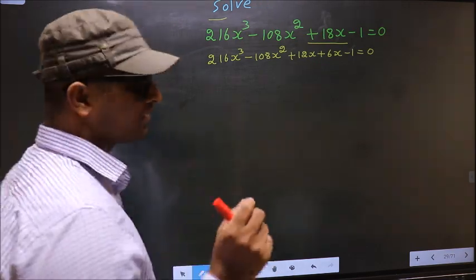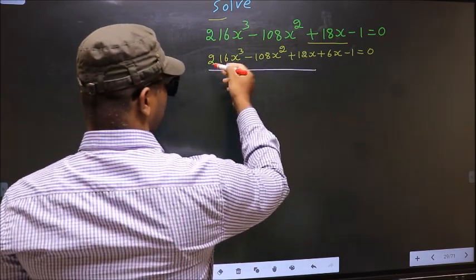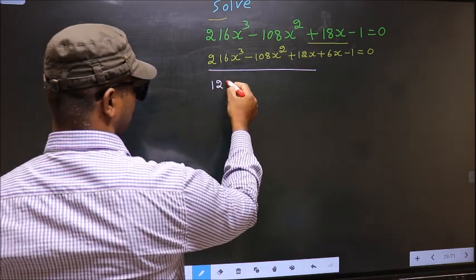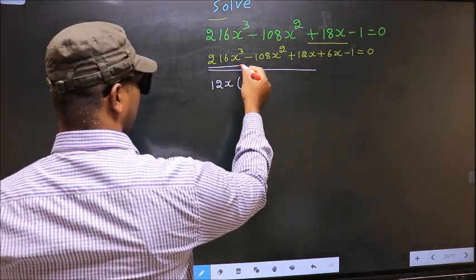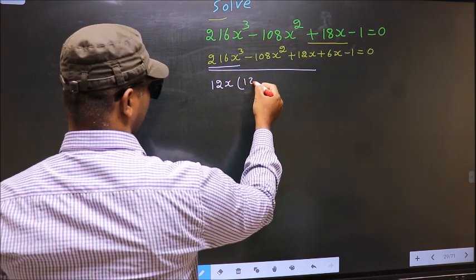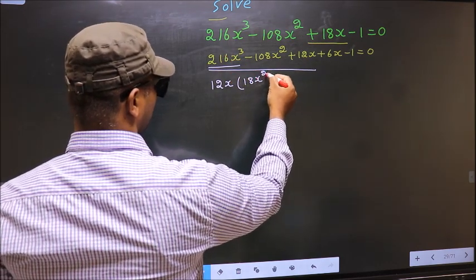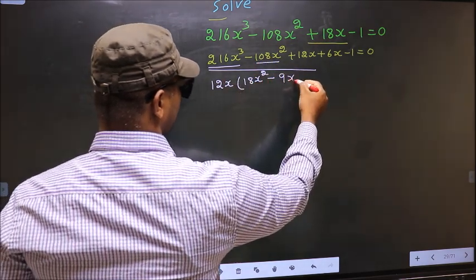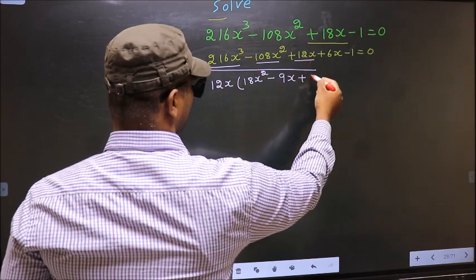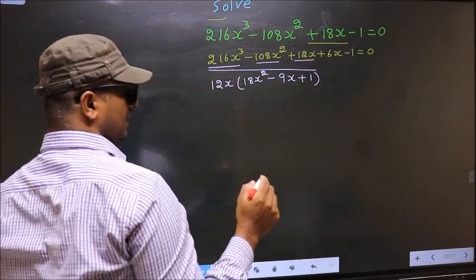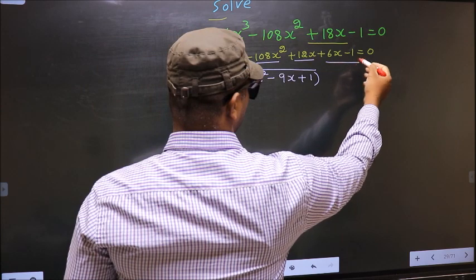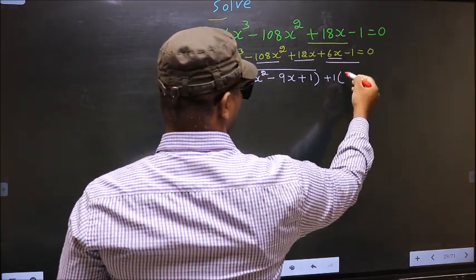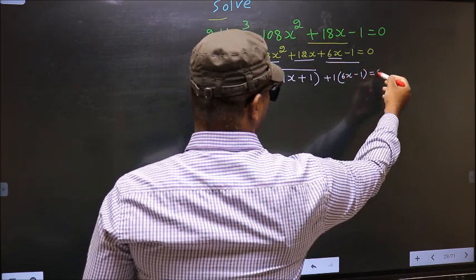Now from the first 3 terms, what can be taken out common is 12x. So taking 12x out you get 18x² minus 9x plus 12x out gives 1. From the last 2 terms what can be taken out common is plus 1, and you get the same thing equal to 0.